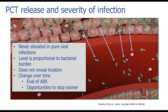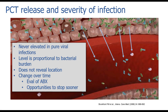For the first time ever, the more toll-like receptors that are activated — meaning the more bacteria you have — the higher the PCT level. This gives us a tool to assess severity of illness. PCT is never elevated in a pure viral infection. It can tell you about bacterial burden at a point in time. It doesn't reveal the location of infection — we find that diagnostically — but changes over time tell us: are our antibiotics working, and do we have opportunities to stop sooner?